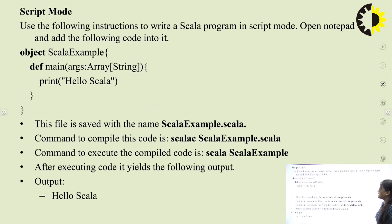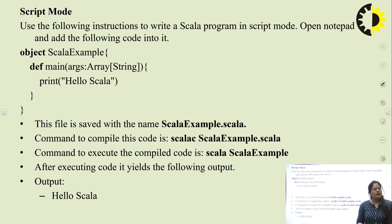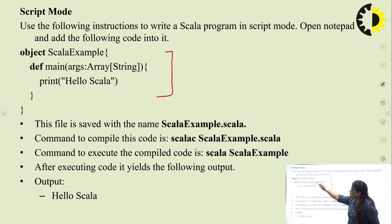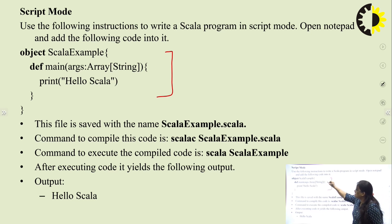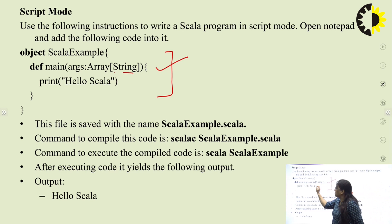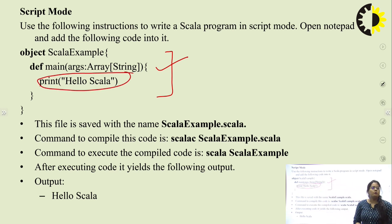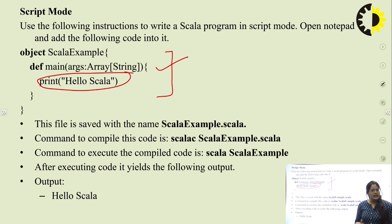In script mode, use the following instructions to write a Scala program. First, open Notepad and add the following code. Create an object ScalaExample with the main method: def main(args: Array[String]). Inside, use the println statement to print 'Hello, Scala'. This println statement displays 'Hello, Scala' on the output screen. In the above code, we create the object ScalaExample which contains a main method and displays output using the print method.